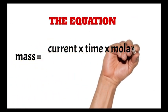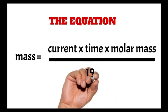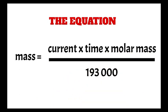This equation, I've tried to simplify it for you. Simply take your current in amps times by time, times by the molar mass, and divide it by 193,000.